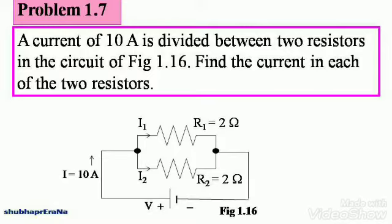Let's move on to another problem. Problem 1.7. A current of 10 ampere is divided between two resistors in the circuit of figure 1.16. Note down figure 1.16. Find the current in each of the two resistors.